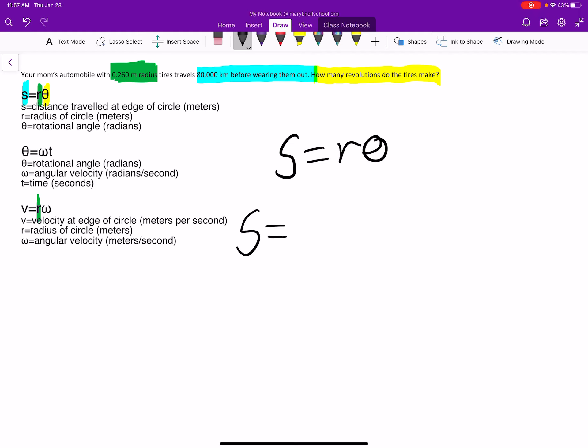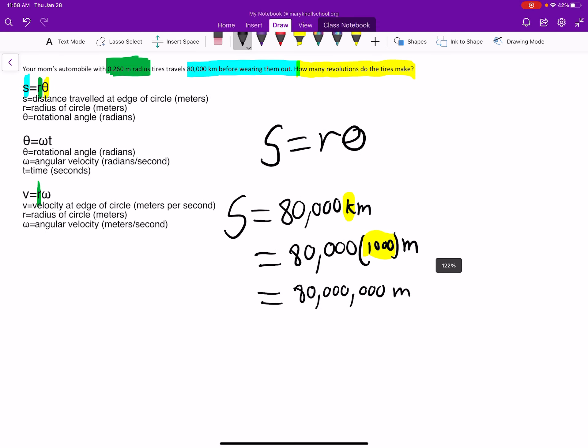So S is going to be 80,000 kilometers. We know that K is actually 1,000. So I'm going to replace it with 1,000 now. And then now we have meters. So instead of 80,000, we have 80 million. Now let's look for R. That's going to be pretty straightforward. R is 0.26 meters, and we don't need to change it at all.